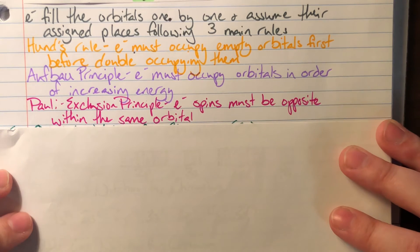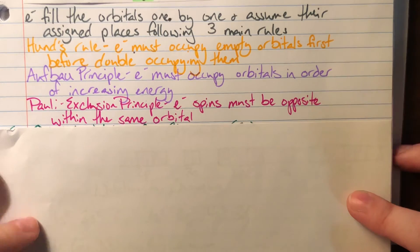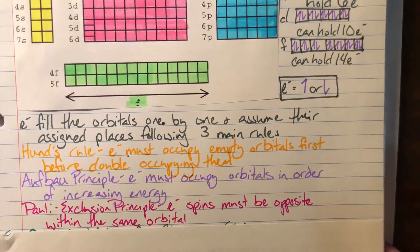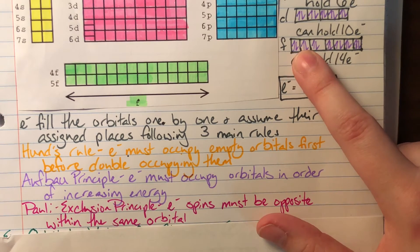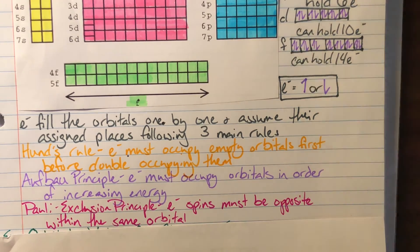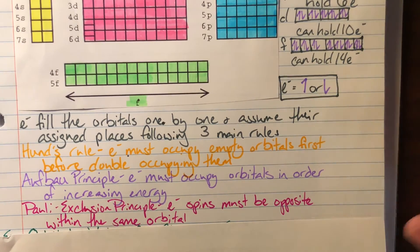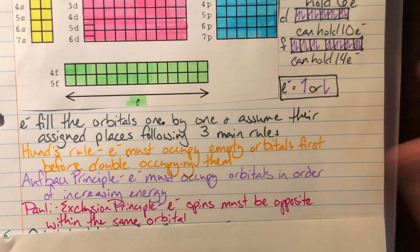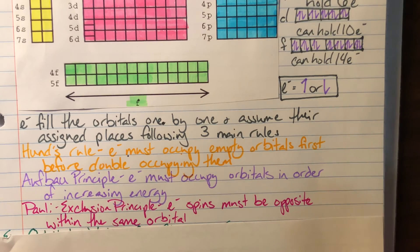My next rule is going to be the Pauli exclusion principle. The Pauli exclusion principle states that electron spins must be the opposite within the same orbital. We saw up here inside of each box that I have both a spin-up and a spin-down electron. I have to have opposite spins, meaning one up, one down, if I'm going to be seated next to another electron. They don't like each other. They have to face away from each other. They must have opposite spins.